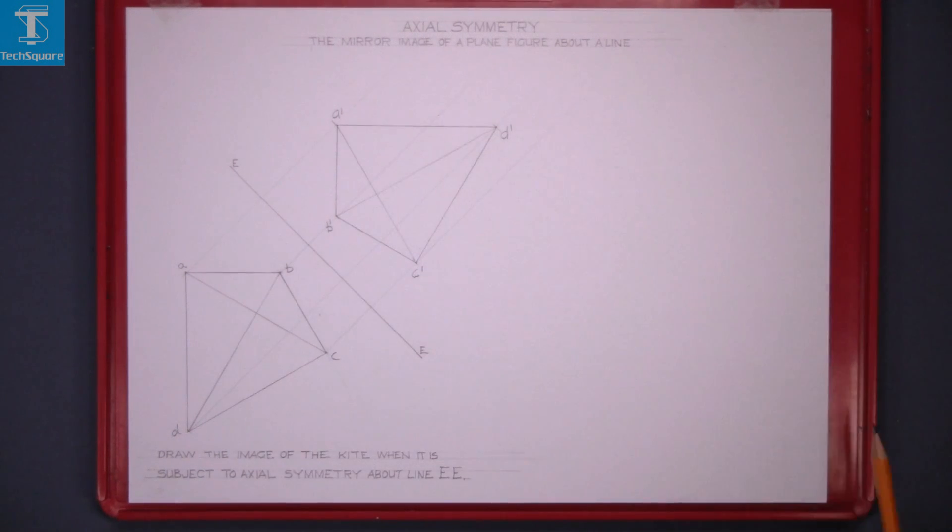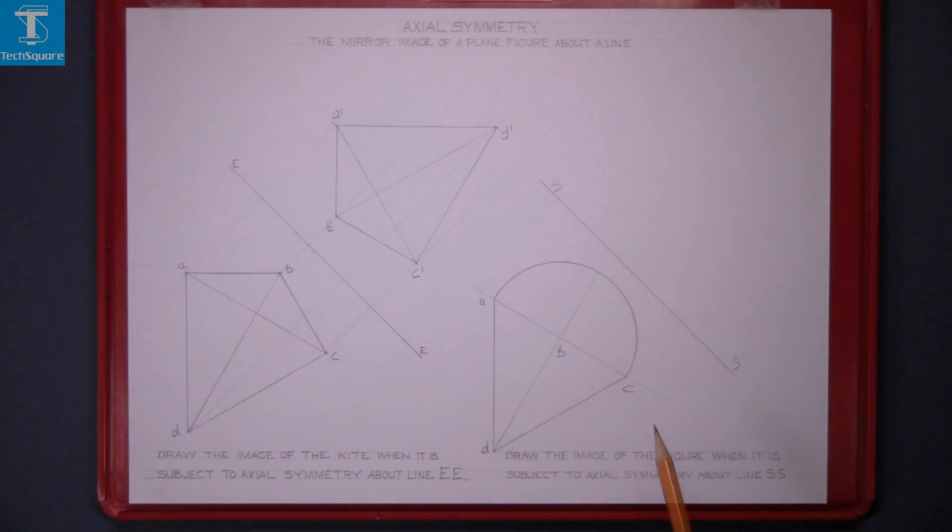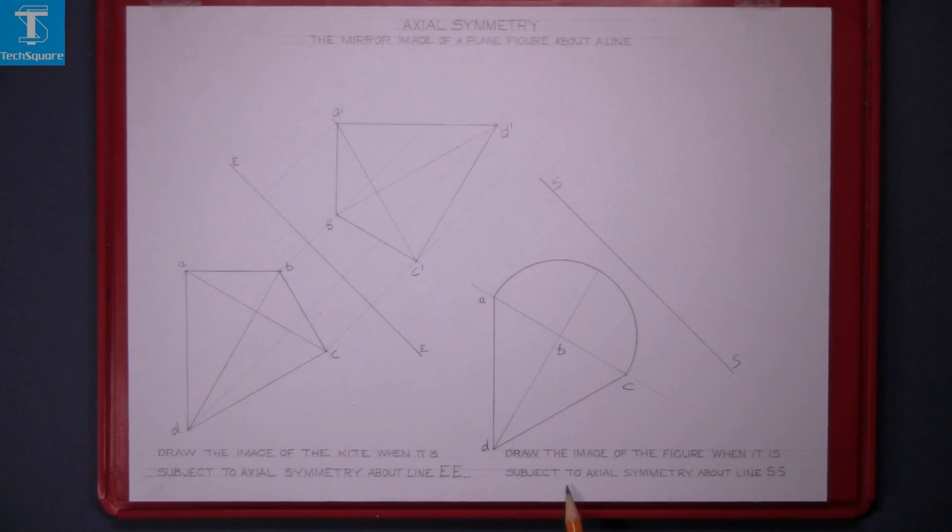And that's the image of the original figure when it is subject to axial symmetry about line EE. Next question here: Draw the image of the figure when it is subject to axial symmetry about line SS.